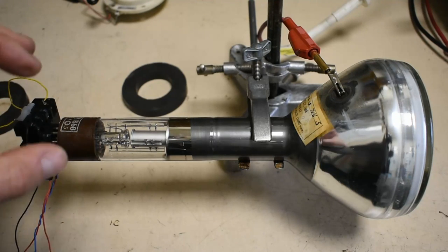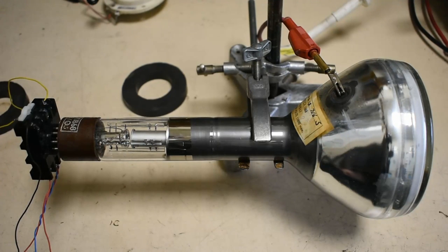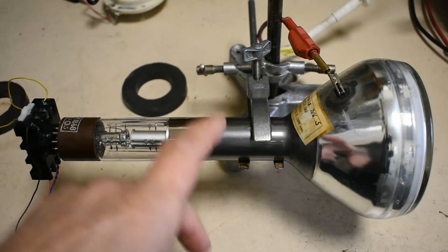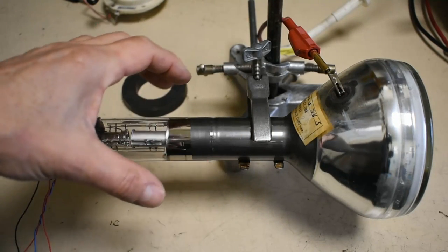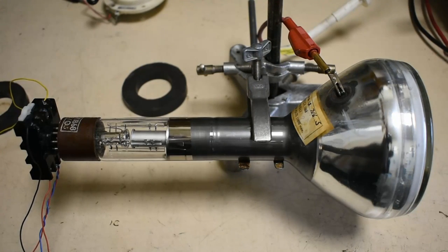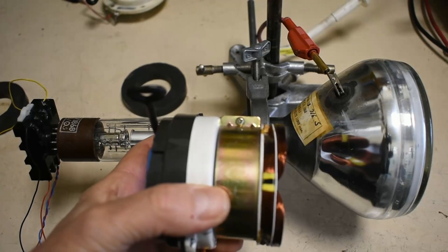This CRT used external focusing using magnets. The deflection coil would sit normally here because it doesn't have XY plates, it has electromagnetic deflection and the coil would sit round about here.